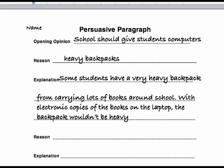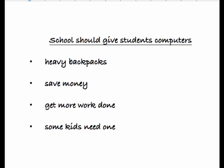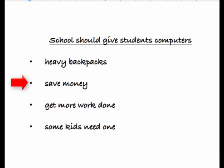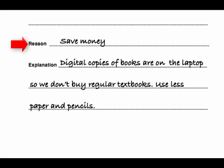Sometimes it helps to pretend you are explaining it to a younger sibling. Then choose a second reason from your list and write it in the second reason section — again, write your explanation in different words to make the reason more clear. Finally, choose a third reason for your persuasive paragraph worksheet and write an explanation for this reason. Remember: make the reason more clear by putting it into different words.